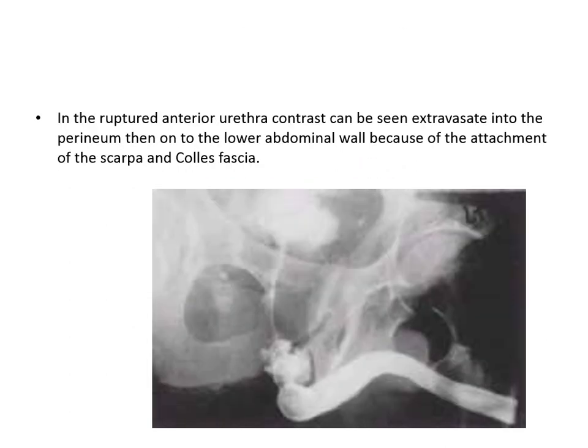The Scarpa fascia extends downward to fuse with the deep fascia of the perineum, the Colles fascia. This is important especially in case of a rupture of the anterior urethra. In this case, when contrast extravasates into the perineum, it will extend upward into the lower abdominal wall, because of the attachment of the Scarpa and Colles fascia.